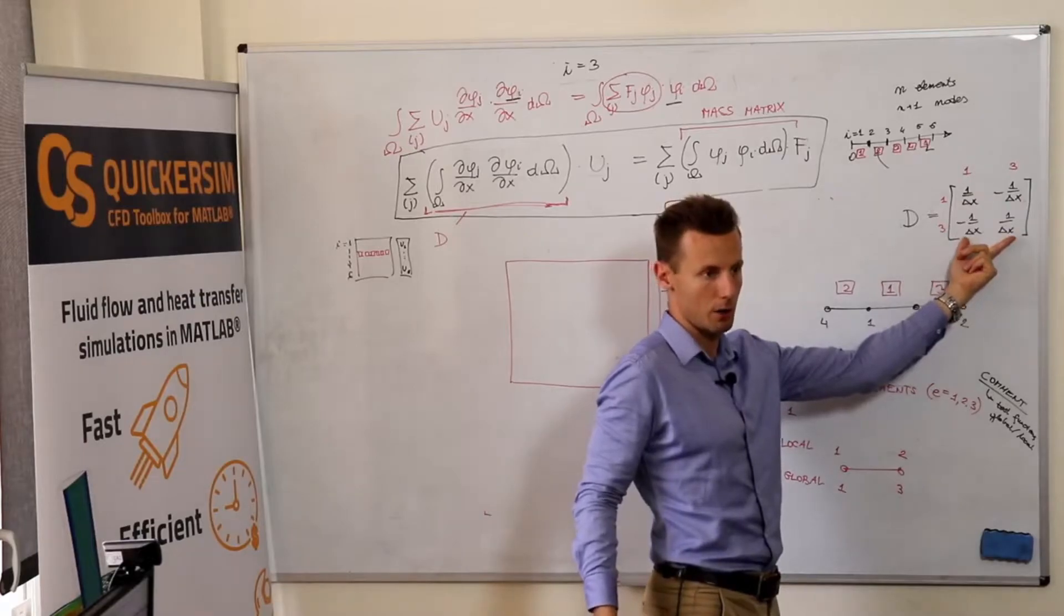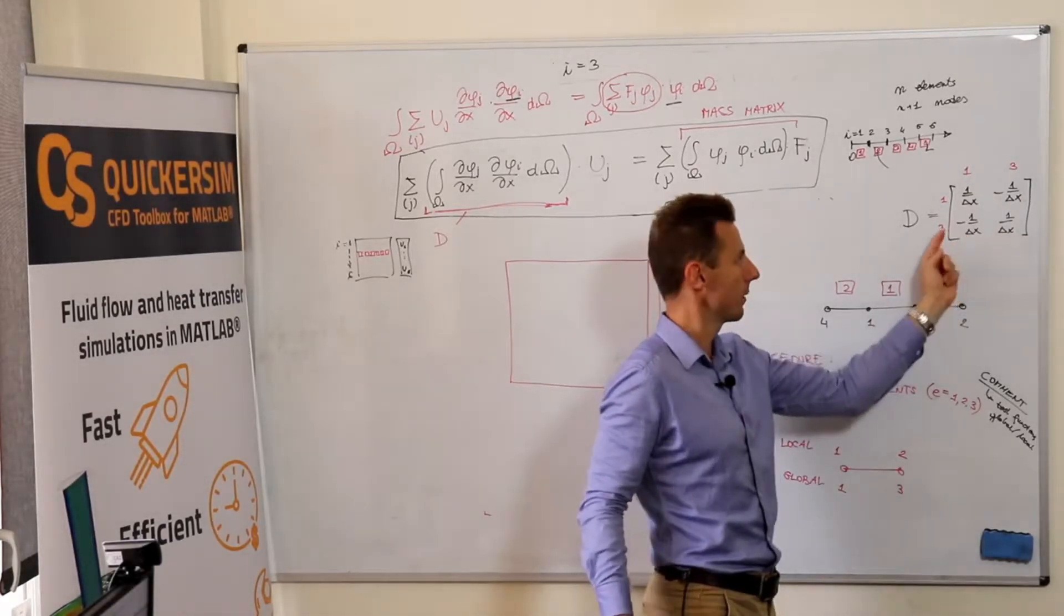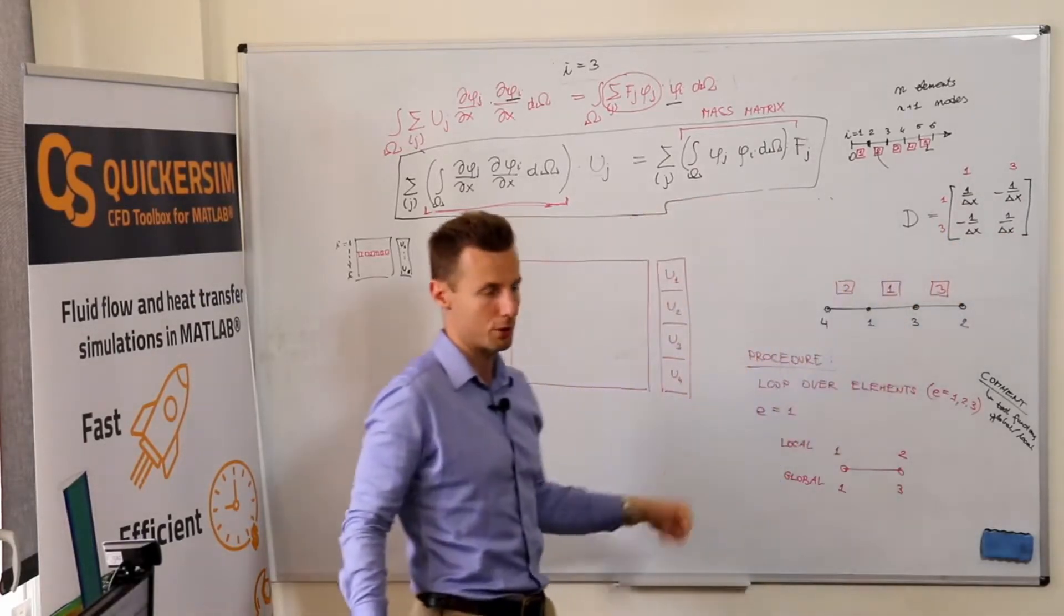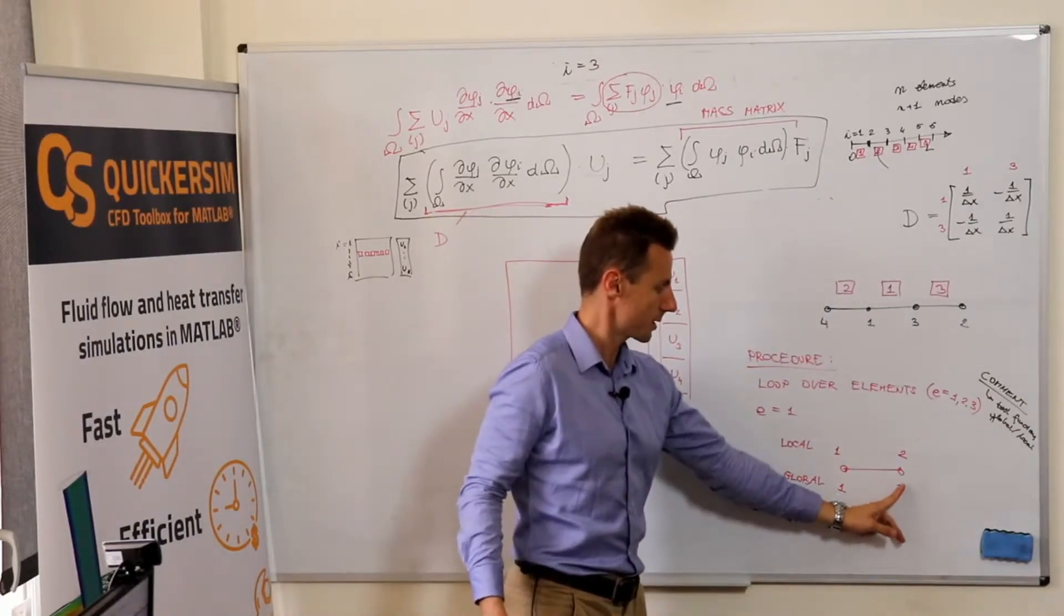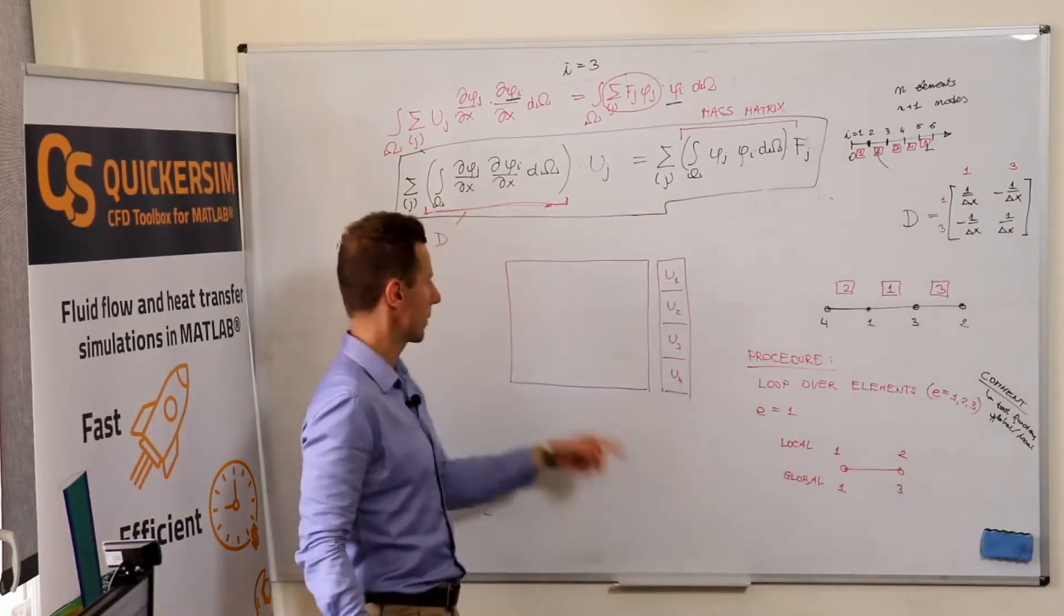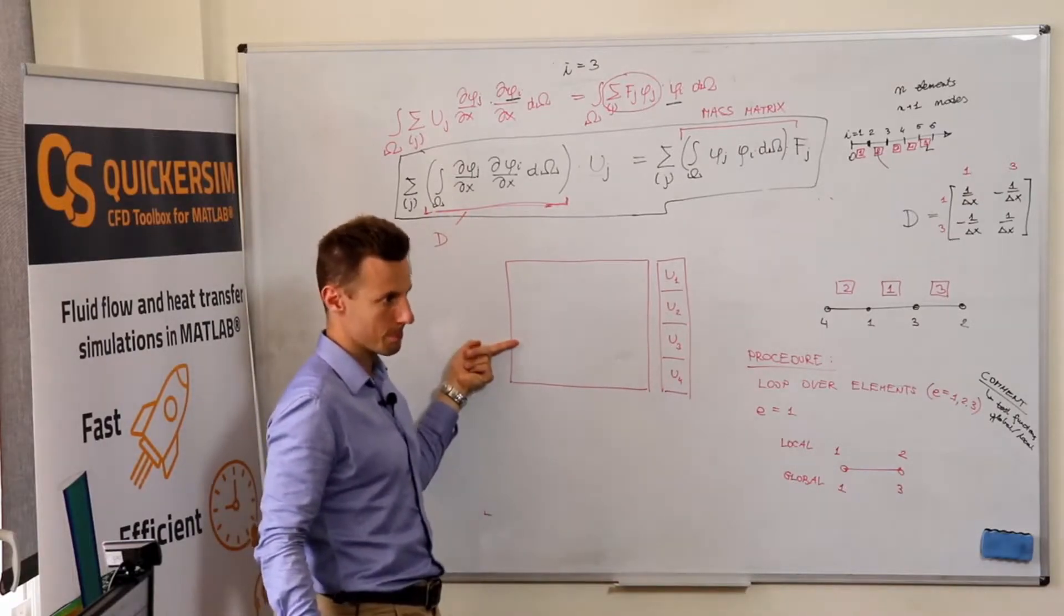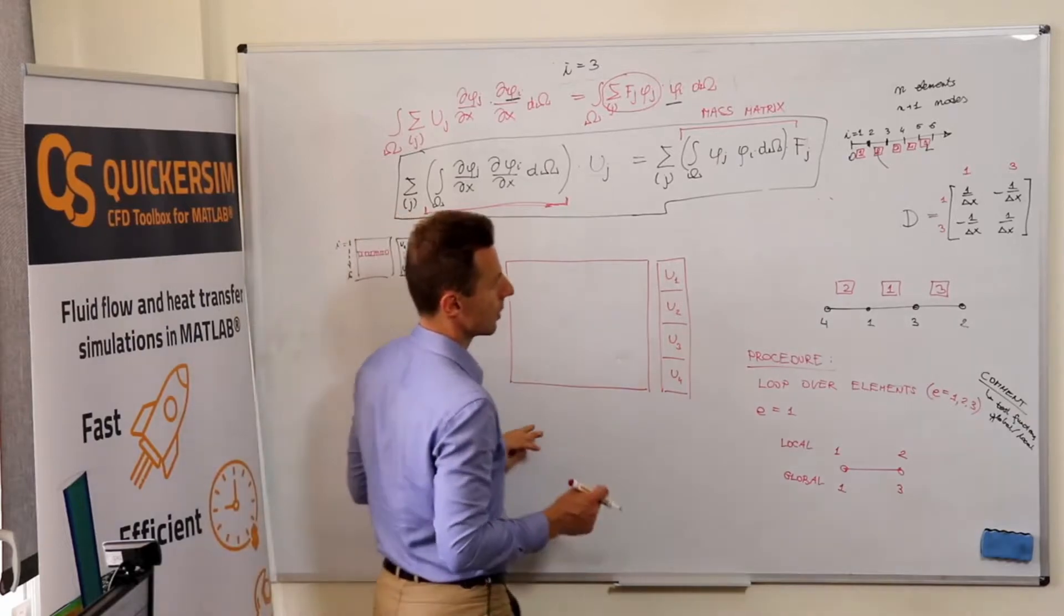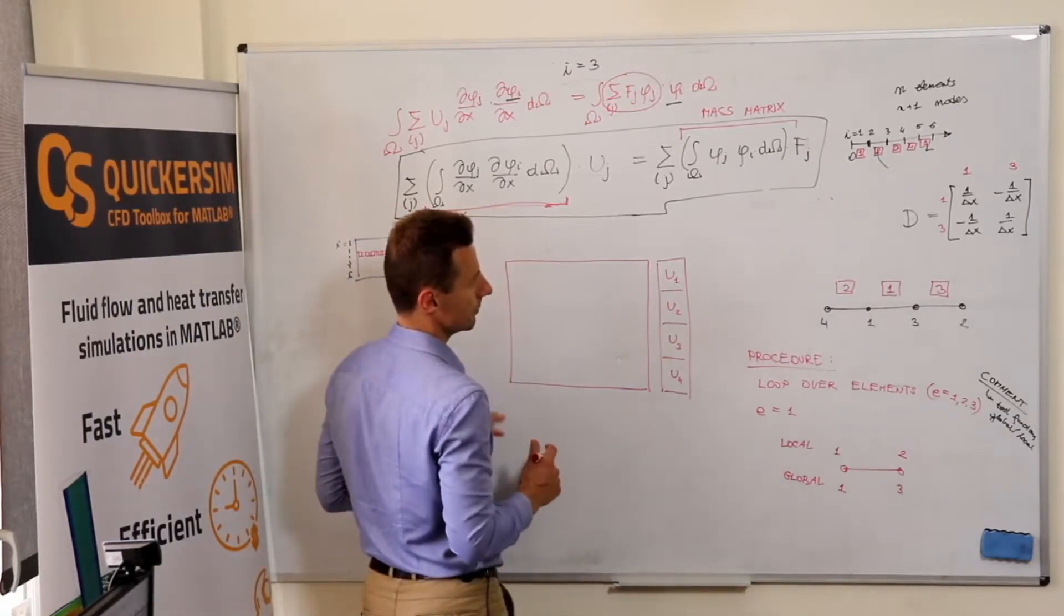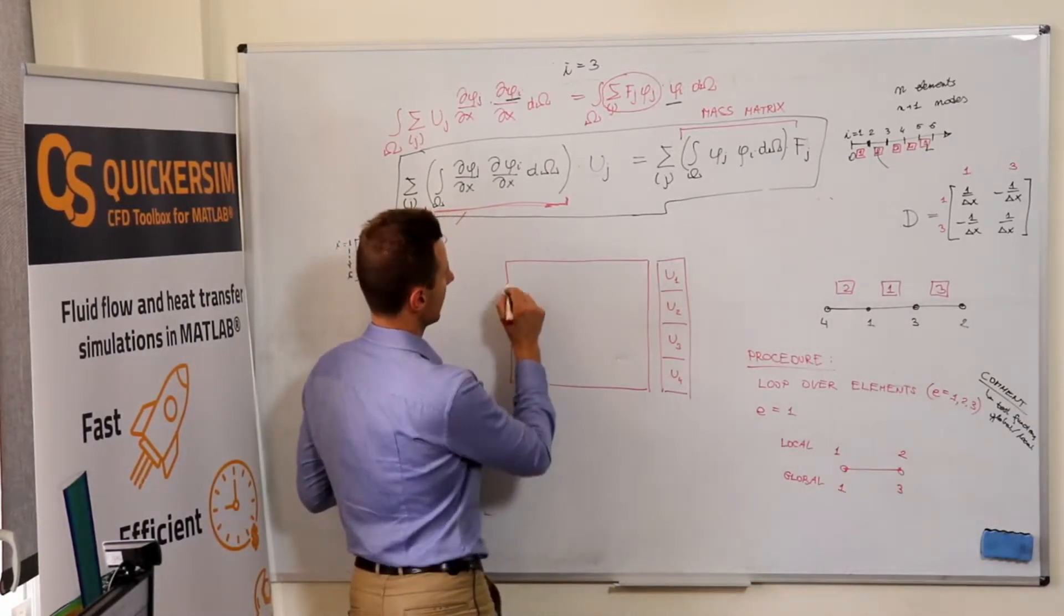This local row should contribute to the third global row because this node should render the equation for U3. Okay, okay.